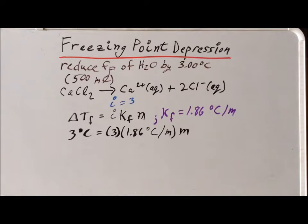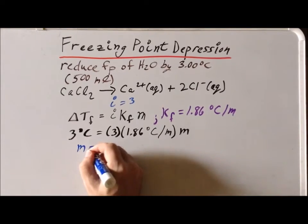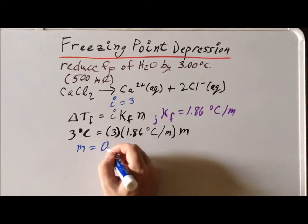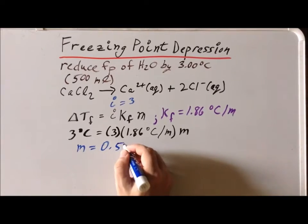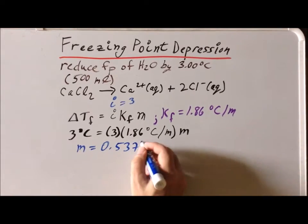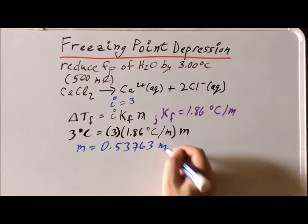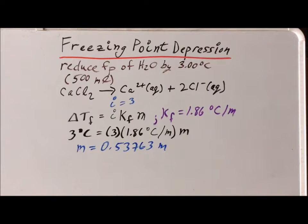If we go through this using the standard methods, we determine that the molality that we want to strive for is going to be 0.53763 mol. So if we can make a solution of calcium chloride that is 0.53763 mol, we will have reduced the freezing point of that solution from zero degrees centigrade down to minus three degrees centigrade.